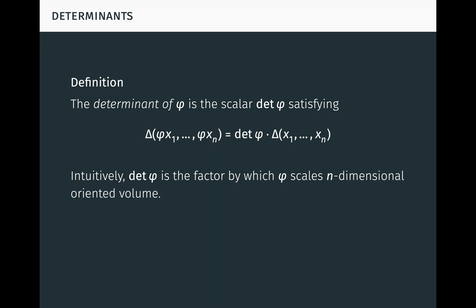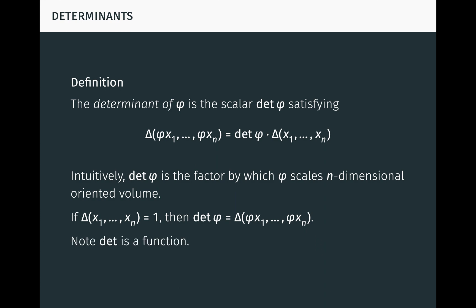The determinant of the linear transformation phi is the scalar, denoted det(phi), satisfying delta of (phi(x1),...,phi(xn)) equals det(phi) times delta of (x1,...,xn) for all vectors x1 to xn. Intuitively, det(phi) is just the factor by which phi scales n-dimensional oriented volume. We note that det is itself a function — it takes a linear transformation as input and returns a scalar as output, called the determinant function. It's important to distinguish this from the determinant function delta, which takes vectors as inputs.